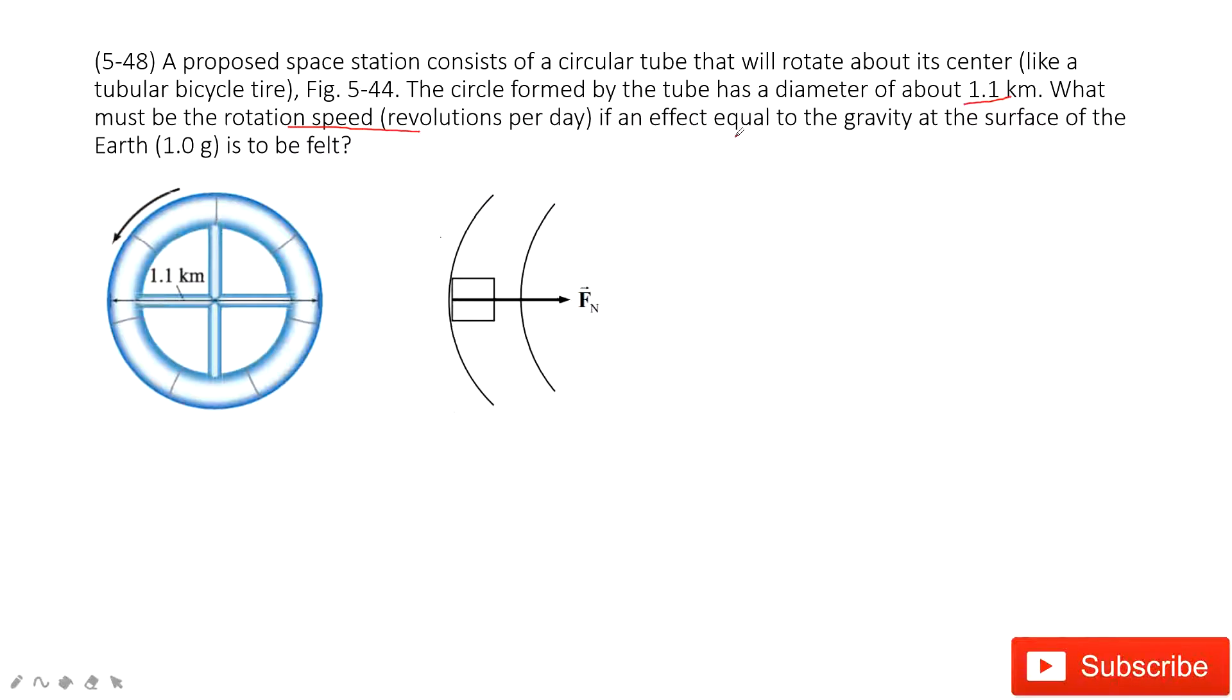If this effect equals gravity at the surface of the earth, so what does that mean? That means the normal force just equals gravity, because the effective field is just the normal force acting on this person by this circle, and then equals the gravity.